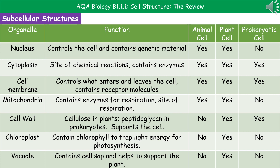The third subcellular structure is the cell membrane, again present in all three cell types. Its purpose is to control what enters and leaves the cell, and it also holds everything together. It also contains receptor molecules on the surface, which are used in signaling between cells. The fourth subcellular structure is the mitochondria, which is the site of respiration because they contain the enzymes for aerobic respiration. Mitochondria are found in animal and plant cells, but not in prokaryotic cells.